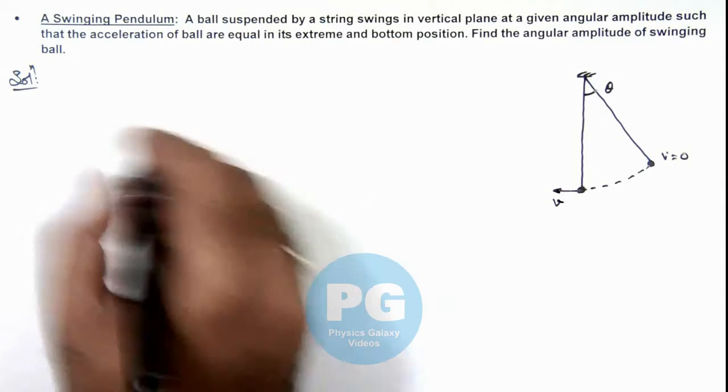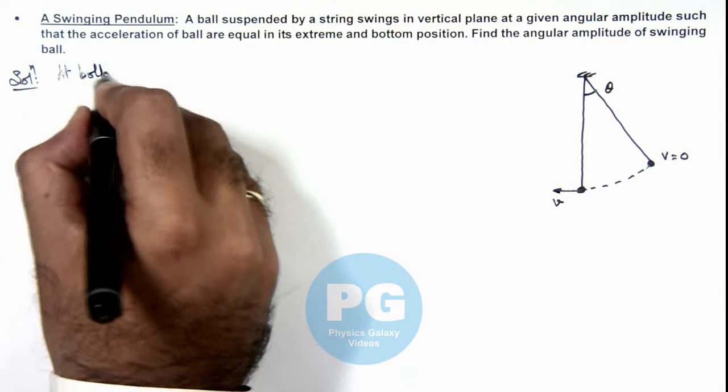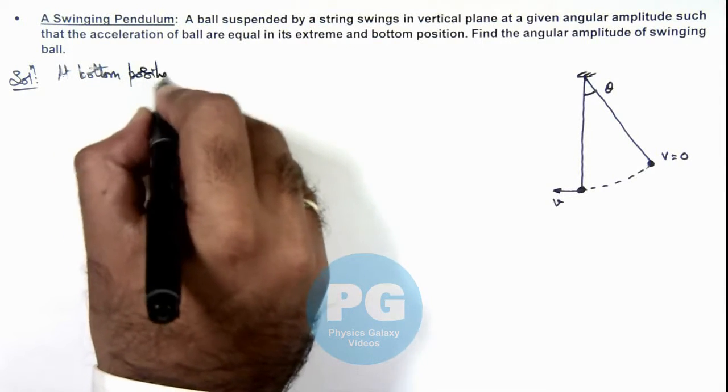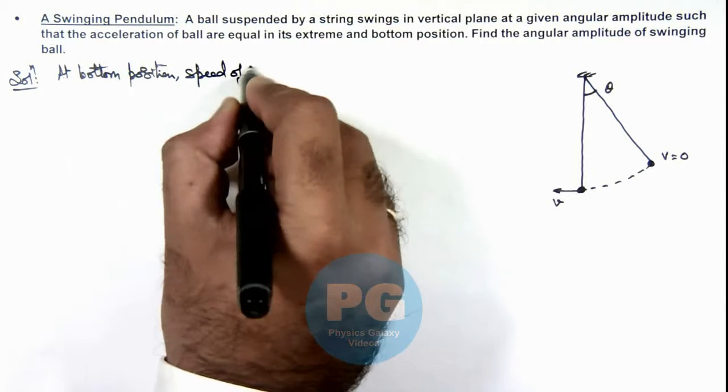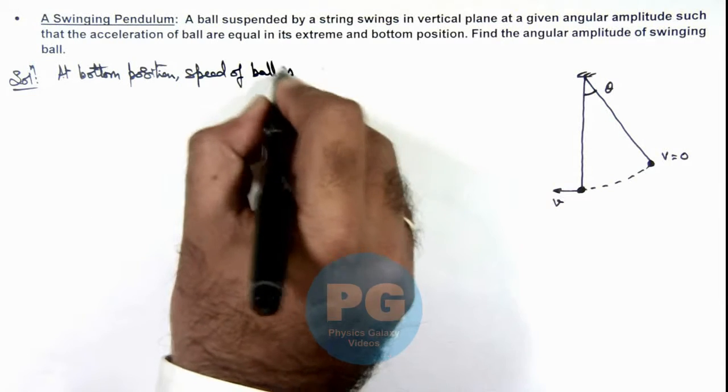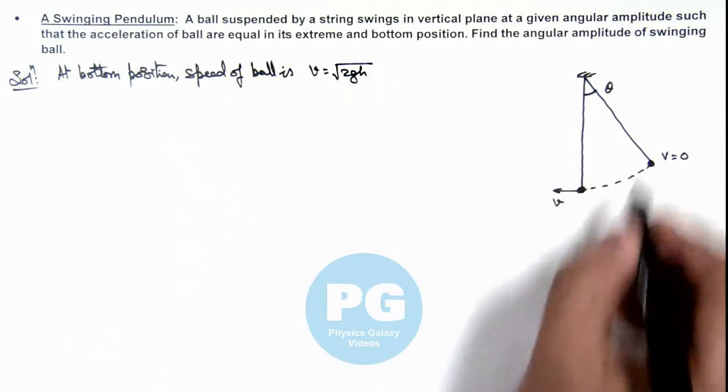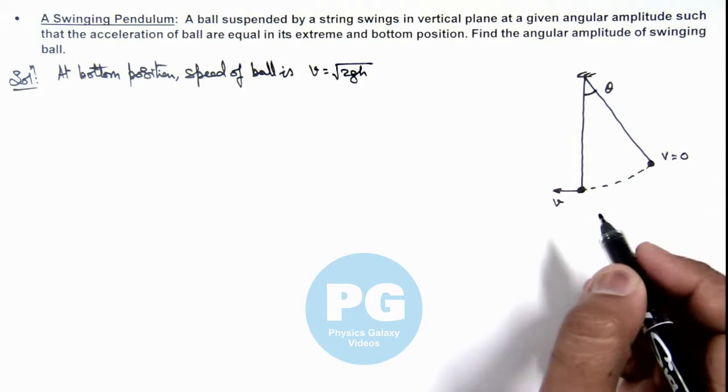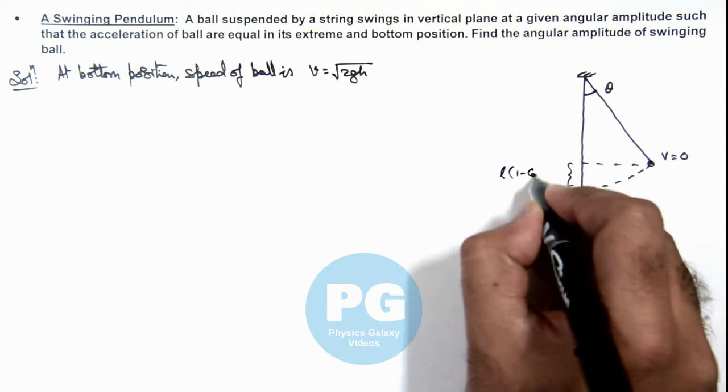So here we can write at bottom position, speed of ball is, this can be written as root 2gh as only gravity is doing work on it. So in this situation the height to which it has fallen is l(1 - cos theta).